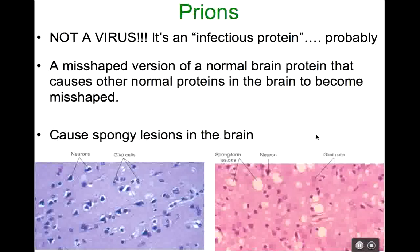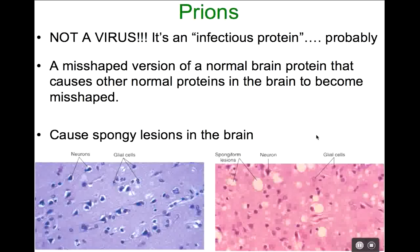The last pathogen I'm going to talk about is a prion. Before I talk about prions, put everything you know about pathogens on hold — this is a very strange thing. Prions are not viruses. Prions are infectious proteins, which is a crazy idea. The prion is actually not a virus, not a bacteria — it's just a protein, and that protein is the damage. It causes the death during a prion disease.